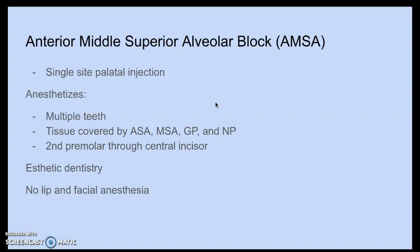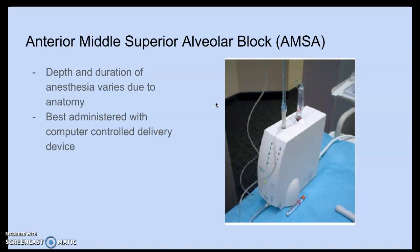The AMSA is a single-site palatal injection that covers all the tissues of ASA, MSA, GP, and NP, from the second premolar through the central incisor. It's mainly used for aesthetic dentistry because the lip and facial features remain unanesthetized — allowing the patient to still smile while the clinician works on their smile.